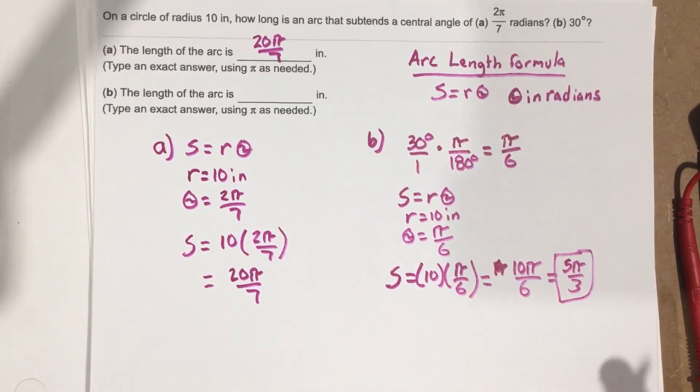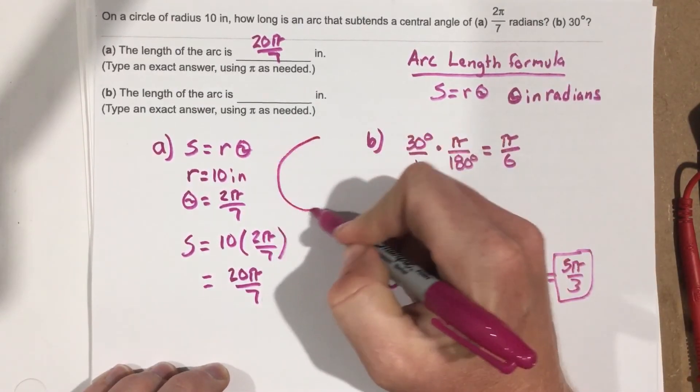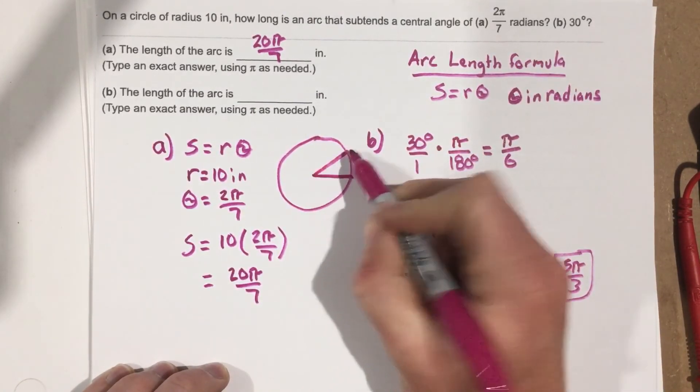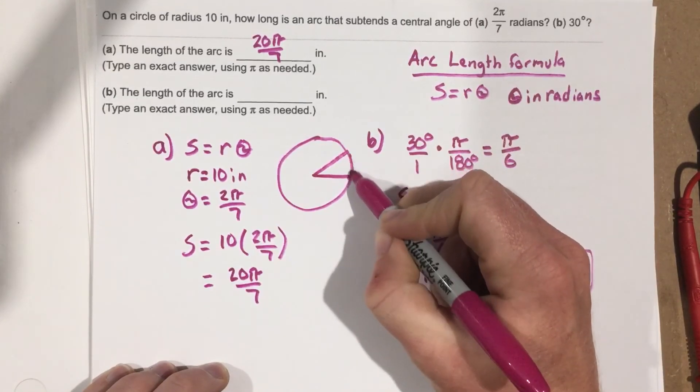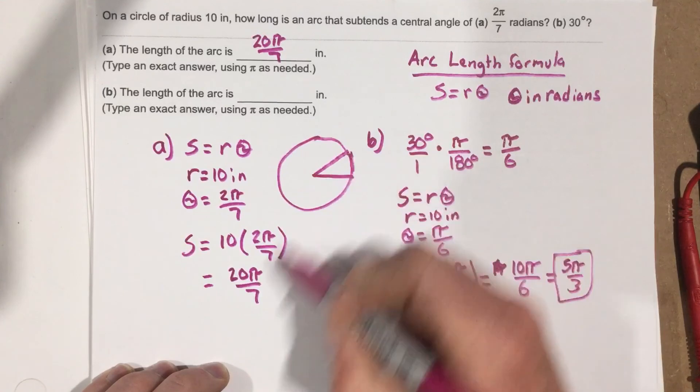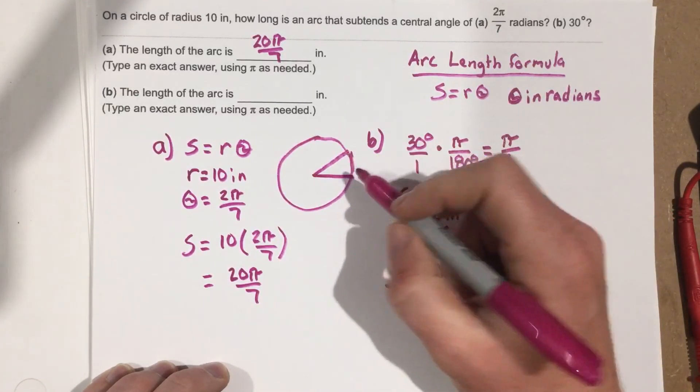So if you remember arc length, if you didn't remember what arc length was, arc length is just looking at this length right here. So on the first part, we have 20π over 7. The second part, we have 5π over 3 for our arc length.